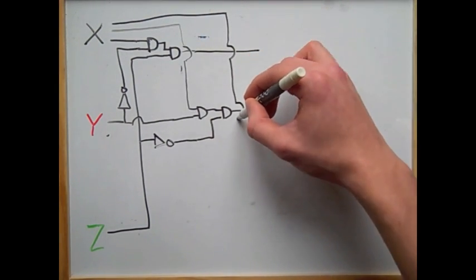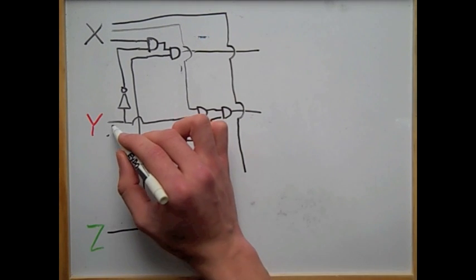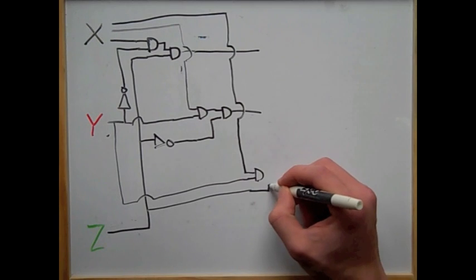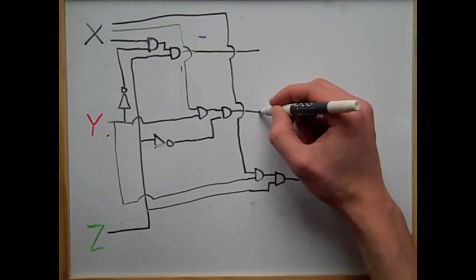Now we need to do x, y, and z, so we don't need any inverters for this one. And I'm just pulling the x, y, and z inputs near each other. And now all we do is make the AND gates.